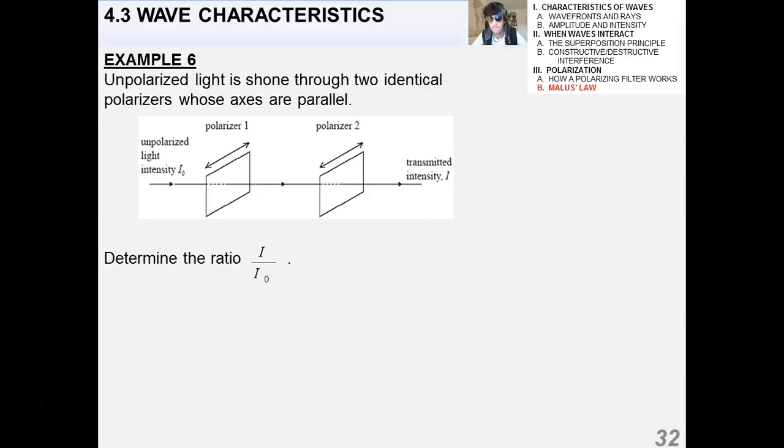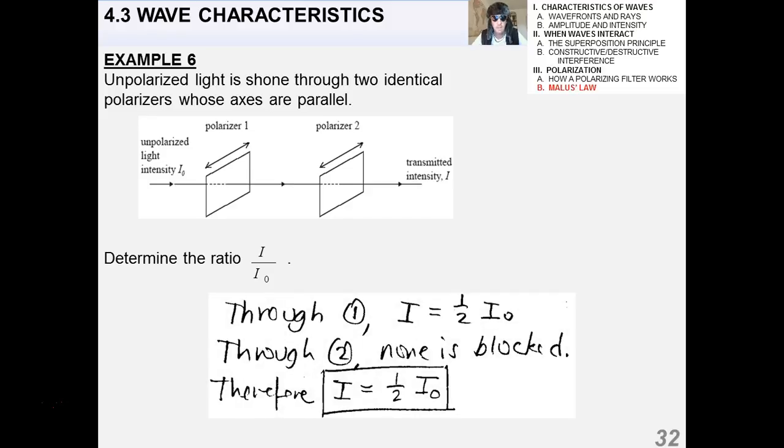Last example, unpolarized light is shown through two identical polarizers whose axes are parallel. Determine the ratio I to I naught. So through one, I is equal to one-half I naught, of course. Through two, none of it is blocked. So therefore, I is going to be equal to one-half I naught as stated previously.